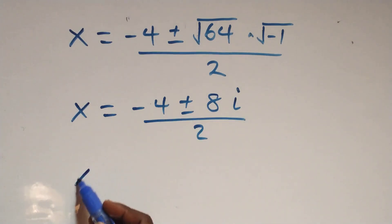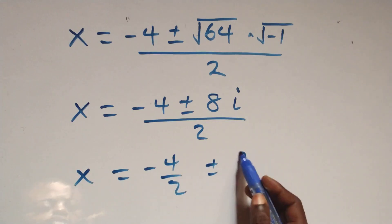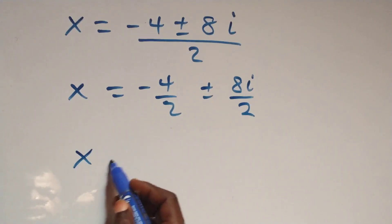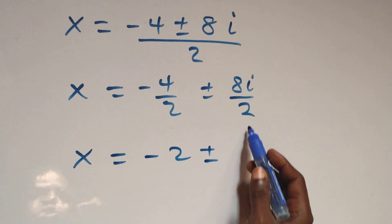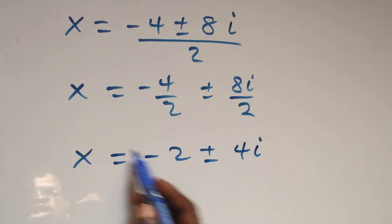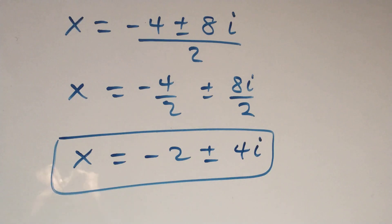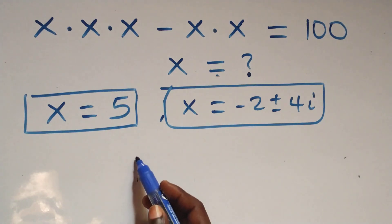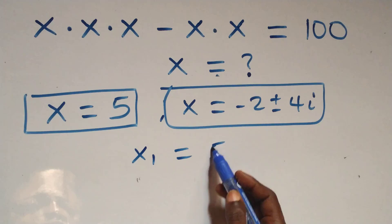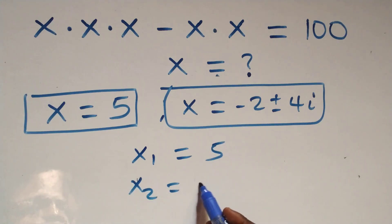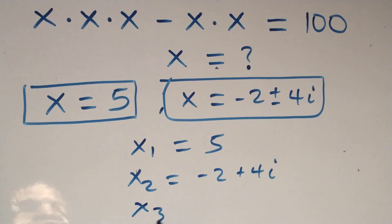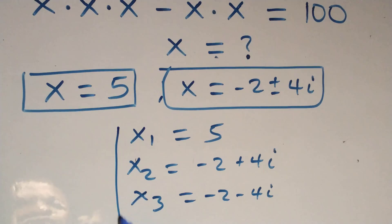We can separate this as x equals minus 4 over 2 plus or minus 8i over 2. Then 2 goes into minus 4 giving minus 2, and 2 goes into 8i giving 4i. So x equals minus 2 plus or minus 4i. We have two complex solutions. All together in this given problem we have three solutions: x₁ equals 5, x₂ equals minus 2 plus 4i, and x₃ equals minus 2 minus 4i — one real solution and two complex solutions.